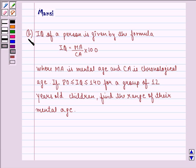The question says IQ of a person is given by the formula IQ equals MA divided by CA times 100, where MA is mental age and CA is chronological age. If 80 is less than or equal to IQ is less than or equal to 140 for a group of 12 years old children,